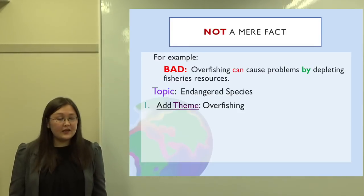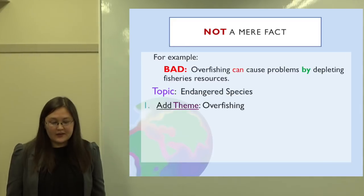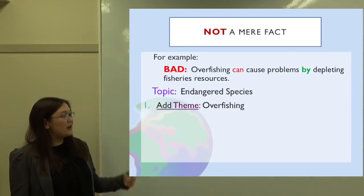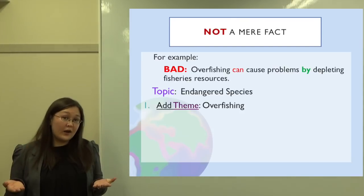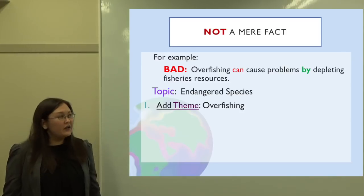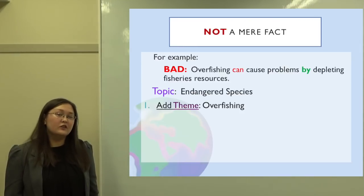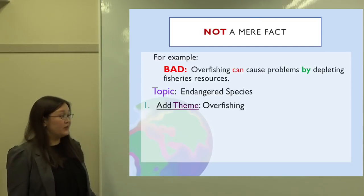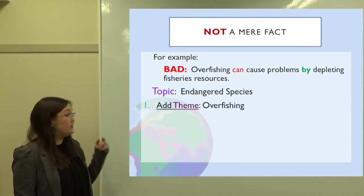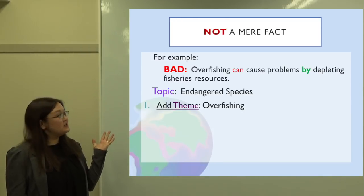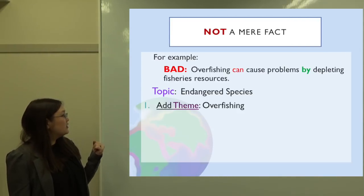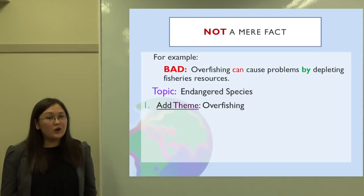Here's the bad one: 'Overfishing can cause problems by depleting fisheries resources.' It's about endangered species with the theme of overfishing, so it's a little narrow. But this is a bad thesis statement — why? It says overfishing 'can' cause problems, meaning it could or might, but it's not clear whether it actually does. 'Can' is not clear enough. The word 'by' is good — it shows the reason, by depleting fisheries resources — but still, this is very vague. What kind of problems are caused by depleting fisheries resources? What are fisheries resources more specifically? This is still too broad and too vague.